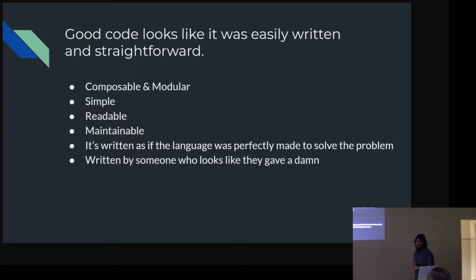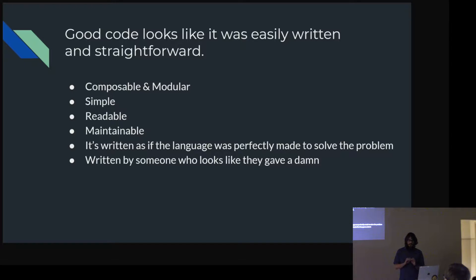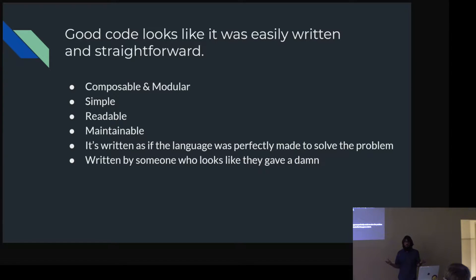Good code is easily written and looks very straightforward — it's composable, modular, simple, readable. It really looks like the language was made to solve the problem. I think of the Doom 3 source code: I don't know anything about game programming, but I can follow it. An analogy is billiards — if you watch a really good billiards player, they're not taking crazy shots. They're all very easy shots, but they're setting up the cue ball so they never have to take the hard shot. Good code does that — you set up an environment where you're easily able to spell out the solution.